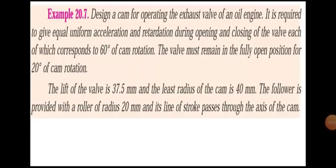Today class, we are going to see another problem in cam. Design a cam for operating the exhaust valve of an oil engine. It is required to give equal uniform acceleration and retardation during opening and closing of the valve, each of which corresponds to 60 degrees of cam rotation. The follower is provided with a roller of radius 20 mm and its line of stroke passes through the axis of the cam.